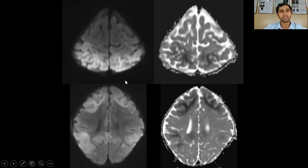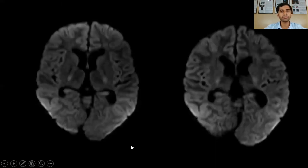This is another case of a 10-year-old patient with a history of repeated seizures. You can see areas of restricted diffusion in the bilateral frontal and parietal lobes, which are symmetrical in distribution.